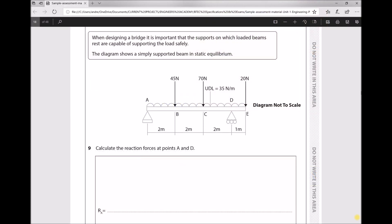Question 9 reads when designing a bridge it's important that the supports on which loaded beams rest are capable of supporting the load safely. The diagram shows a simply supported beam in static equilibrium and the question asks us to calculate the reaction forces at points A and D.